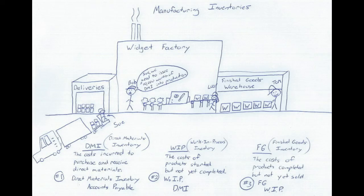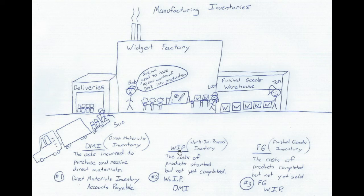Hello class. This video is going to go over manufacturing inventories and the flow of inventory through the manufacturing process from start to finish. There are three different types of inventory accounts used in manufacturing. The first one is called DMI, direct materials inventory, then we have work in process inventory,